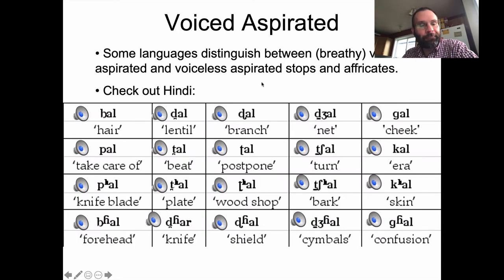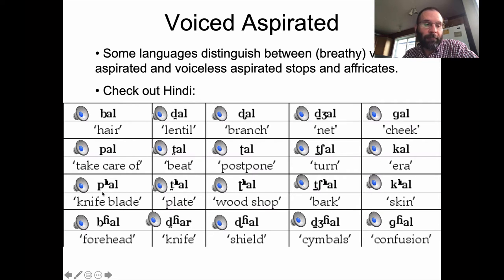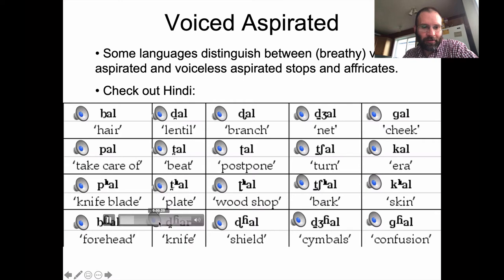We've also got examples from Hindi, which has a four-way phonation contrast for consonants: voiced unaspirated stops, voiceless unaspirated stops, voiceless aspirated stops ('thal'), and voiced aspirated stops ('dhal'). You should be able to hear that breathy voice quality on the voiced aspiration. These are dental stops; there are also retroflex stops in Hindi — a contrast we don't have natively in English. Another contrast that doesn't exist in English is between a voiced unaspirated stop and a voiceless unaspirated stop.